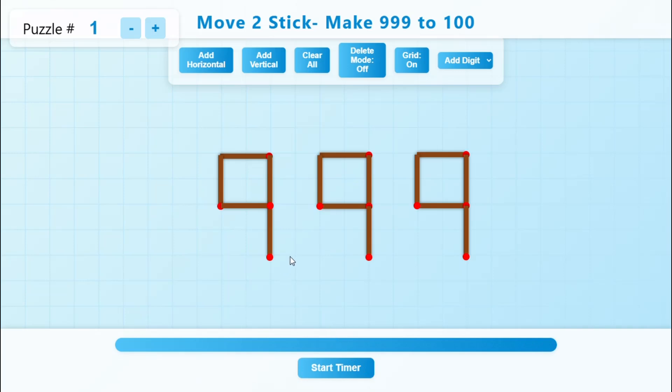So to solve this, if you see on the screen there are 3 nines there. So first what we have to do is move this matchstick over here. Move like this and then move this matchstick over here and move here.